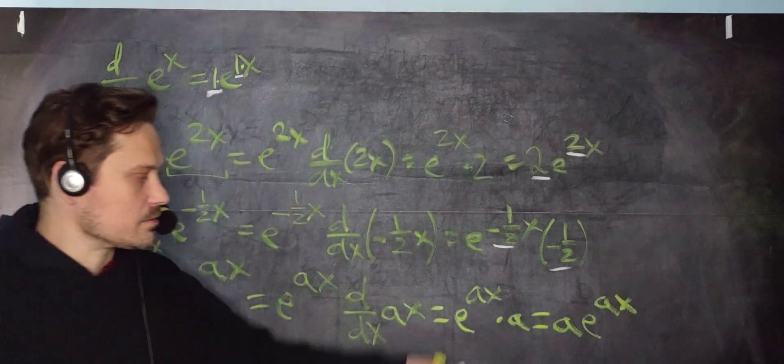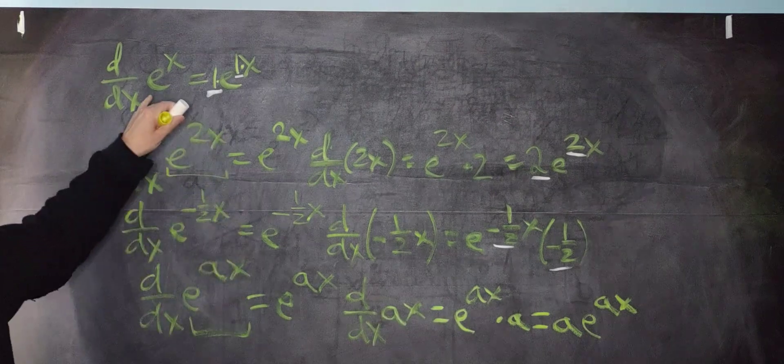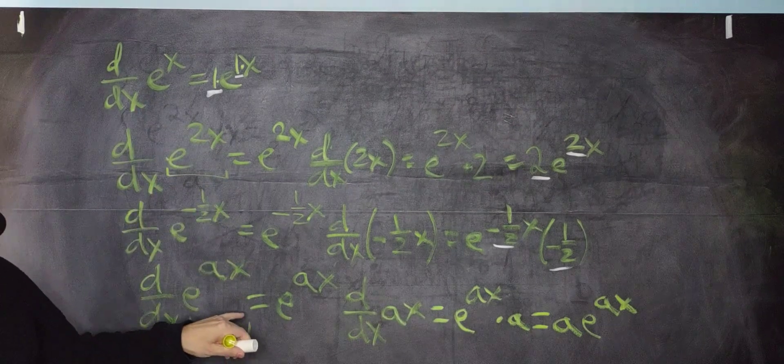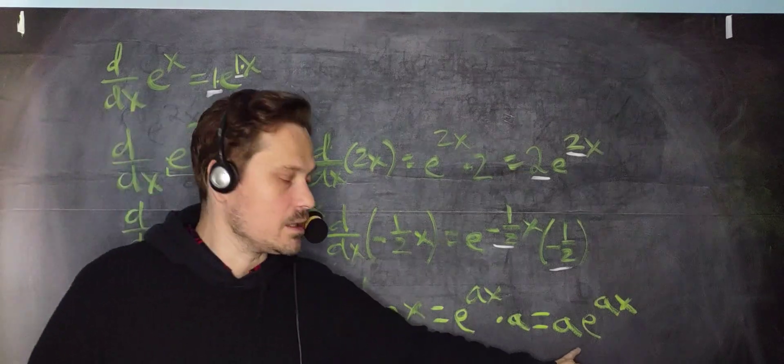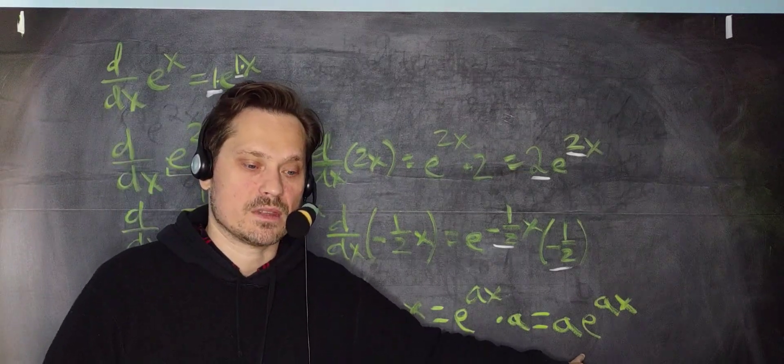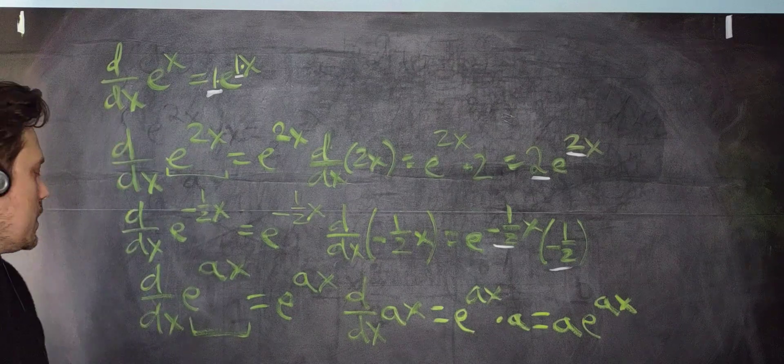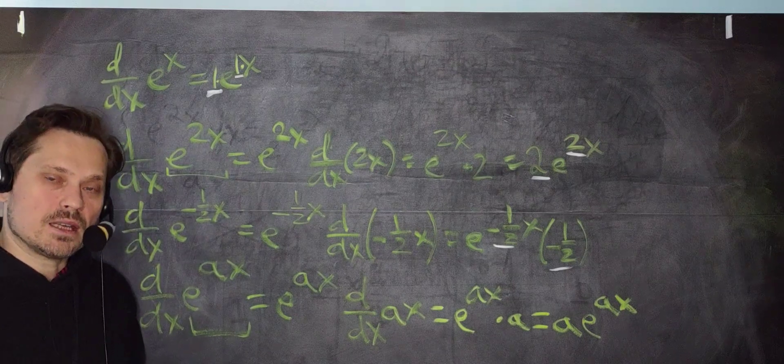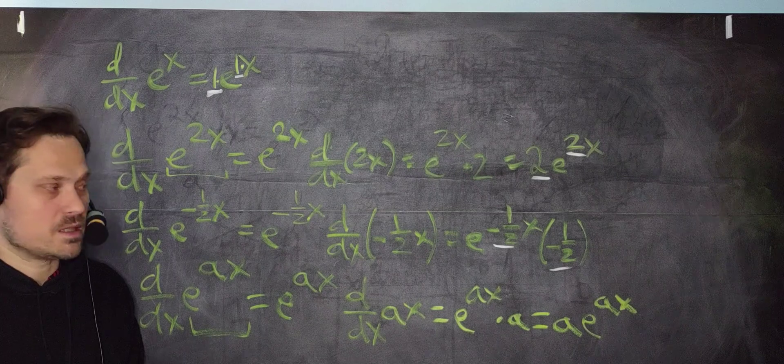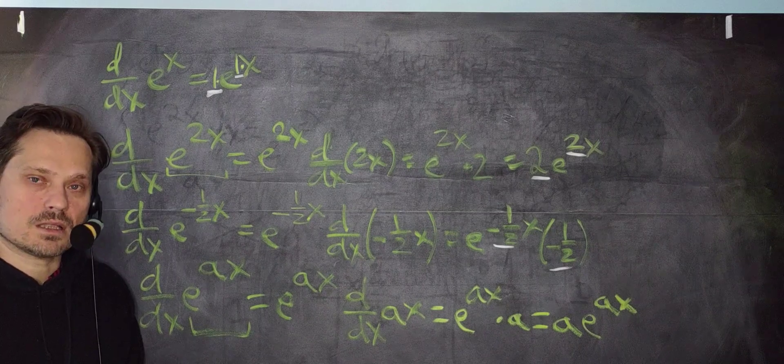So whenever, that's the rule, basically. Whenever you have an expression of the form e to the ax, and you have to differentiate it, this is what you end up with. Something like this. The different values of a that you might have for your particular exercise. And that's how you do this. So thank you. Please leave a like. Please subscribe. I hope it's been insightful, helpful. I'll see you in another video.